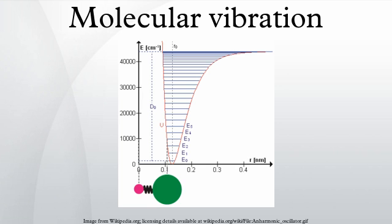To a first approximation, the motion in a normal vibration can be described as a kind of simple harmonic motion. In this approximation, the vibrational energy is a quadratic function with respect to the atomic displacements and the first overtone has twice the frequency of the fundamental.